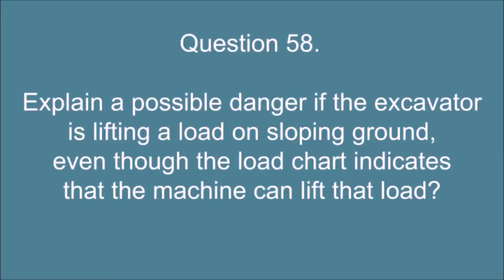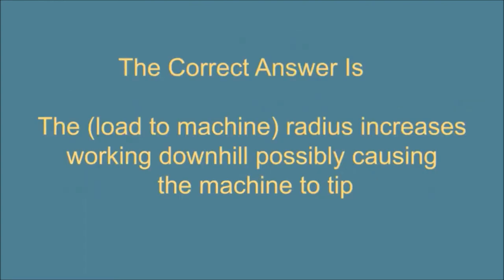Question 58. Explain a possible danger if the excavator is lifting a load on sloping ground, even though the load chart indicates that the machine can lift that load. The correct answer is, the load to machine radius increases working downhill possibly causing the machine to tip.